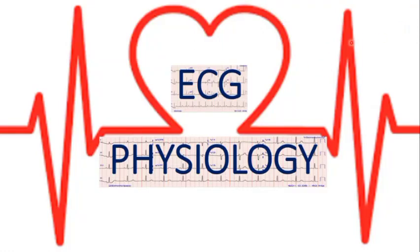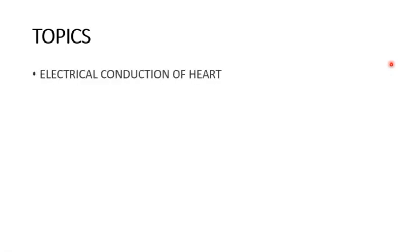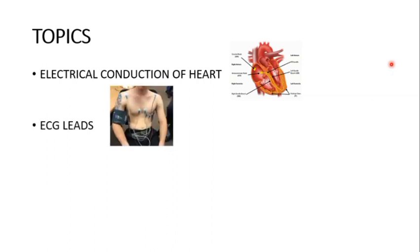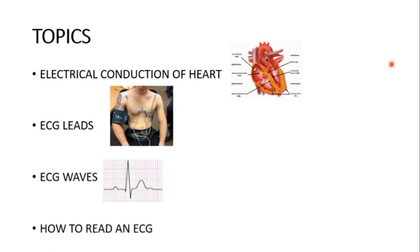Hello doctors, today let's talk about ECG physiology. We'll mostly talk about the normal aspects of the ECG, and I'll also teach you how to read an ECG. ECG means electrocardiogram — it is a device used to measure the electrical activity of the heart. Today we'll discuss the electrical conduction of the heart, ECG leads, ECG waves, and how to read an ECG.